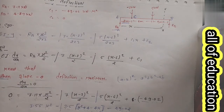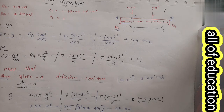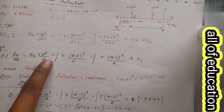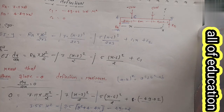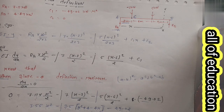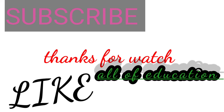Summary: slope = 0 रखते हैं, boundary equation से x की value निकालते हैं, और x को deflection equation में put करते हैं - maximum deflection प्राप्त हो जाता है। अगली video में देखेंगे कि किसी specific point जैसे C point पर deflection कैसे निकालते हैं। Video पसंद आए तो like करें और channel subscribe करें। पहली video i-button पर उपलब्ध है।